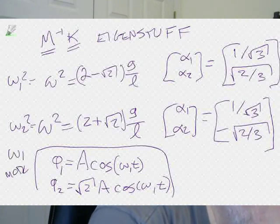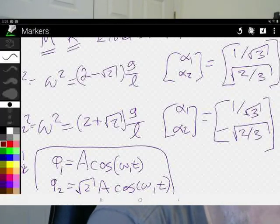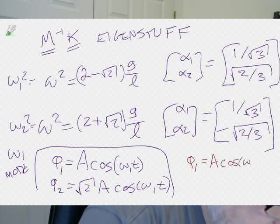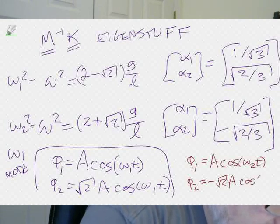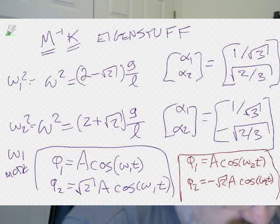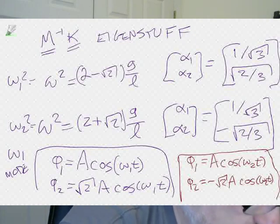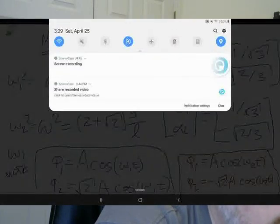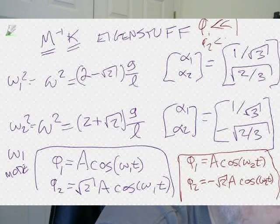For the second normal mode: phi1 = A*cos(omega2*t) and phi2 = -sqrt(2)*A*cos(omega2*t). The minus sign means the two bobs are exactly out of phase — when one goes right, the other goes left. These are the normal modes under the small-angle (linearized) approximation with phi1 much less than 1 and phi2 much less than 1.